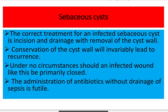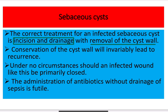For treatment of an infected sebaceous cyst, first we must perform incision and drainage, because there is pus present — whether inside a cavity or outside the body, when there is pus we perform incision and drainage. Then we must remove the cyst wall, as conservation of the cyst wall will invariably lead to recurrence. Under no circumstances should an infected wound be primarily closed — in the case of any infected area we should not perform primary closure.